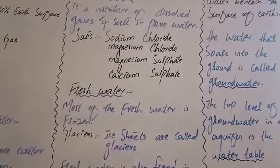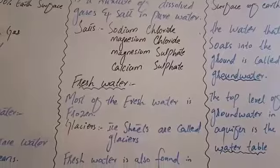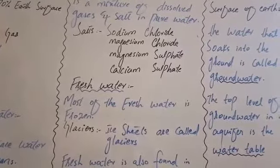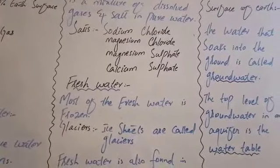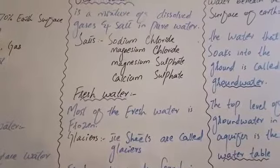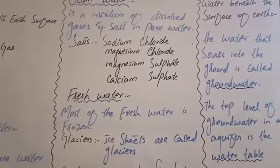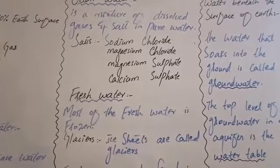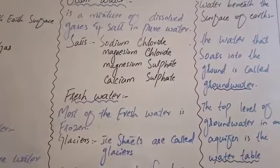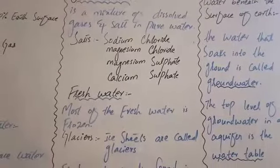The water table changes during the year. When rain increases, the water table rises and the amount of ground water increases. When there is less rain, the water table drops. People dig wells to bring ground water to the surface.